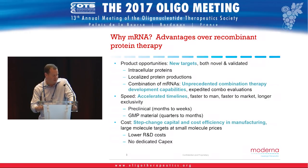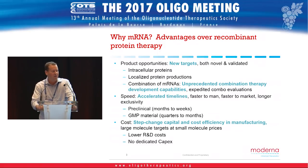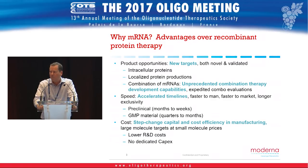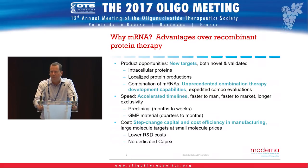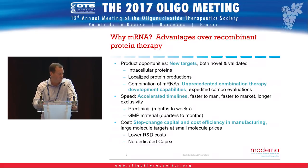Speed and accelerated timelines are another advantage. Once you can change the sequence and generate a new messenger RNA by in vitro transcription, you move very quickly. An example in the vaccine space: when we decided to go after Zika as it began to emerge, we went from antigen design as an idea to being in the clinic in less than a year. That's a remarkable achievement enabled by these turnaround times.